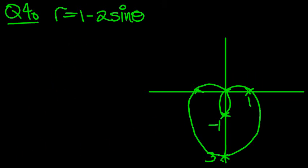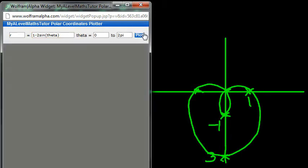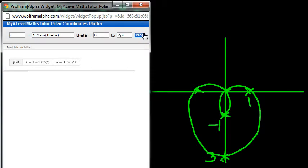Let's just check that. 1 minus 2 sine theta. Let's just quickly check that then. 1 minus 2 sine theta. Check that on the plotter. And hopefully, we get the same function. R equals 1 minus 2 sine theta.